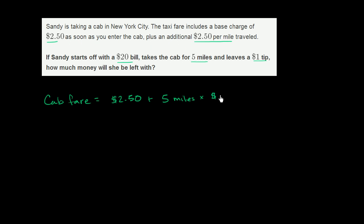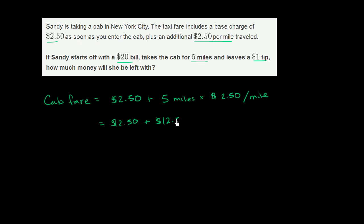Times $2.50 per mile. So the cab fare is $2.50 plus five times $2.50. Five times $2.50 is $12.50, so this is plus $12.50. $2.50 plus $12.50 is going to be $15. So just the cab fare is going to be $15.